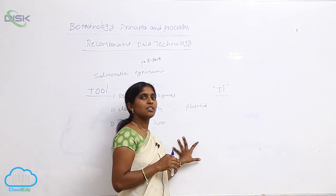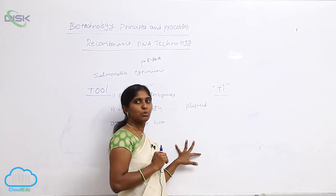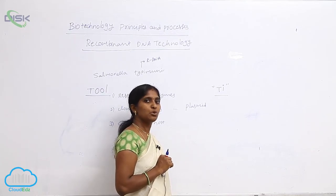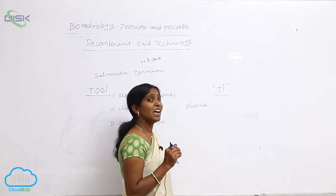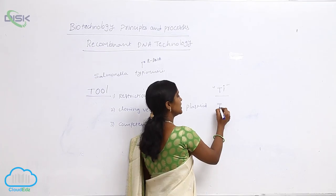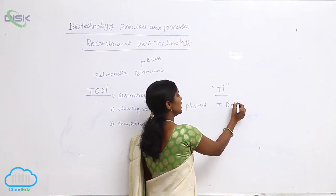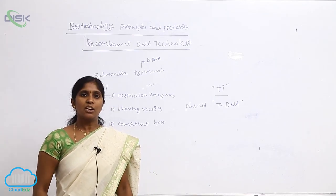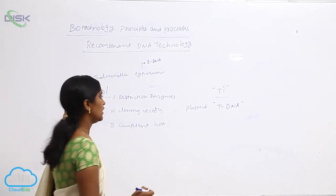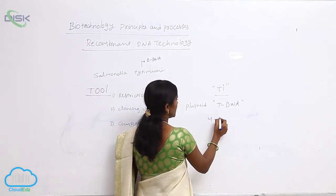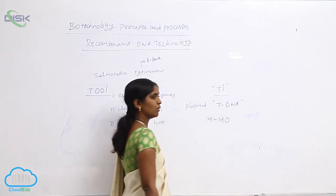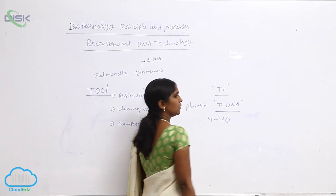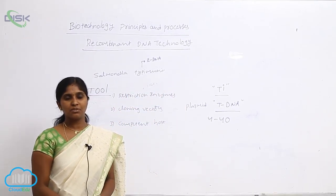Crown gall disease is caused by the Agrobacterium tumefaciens bacteria. It has the Ti plasmid, the tumor-induced plasmid, which contains T-DNA (transfer DNA). The transfer DNA is able to carry foreign DNA — approximately 4 to 40 kilobases of foreign DNA can be carried by the T-DNA, especially into angiosperms.